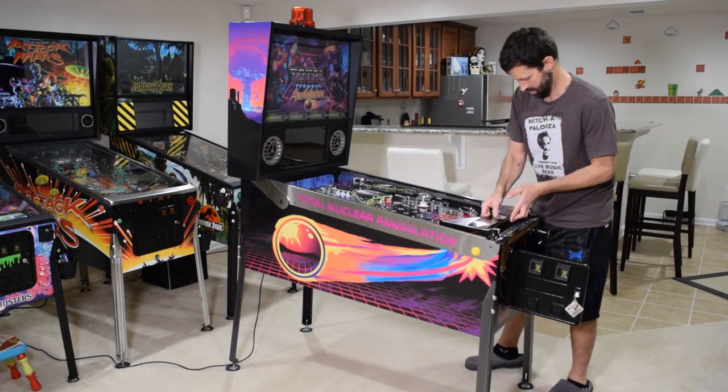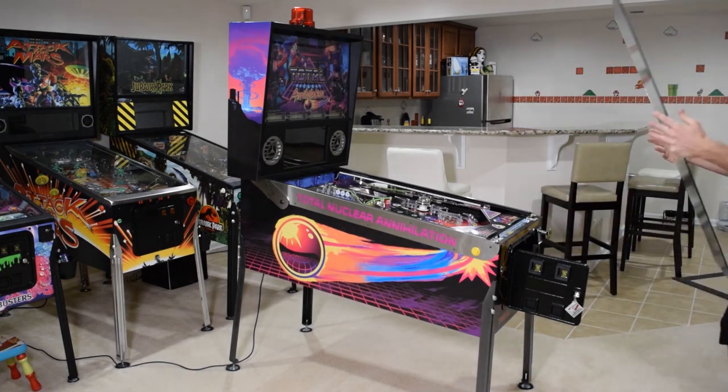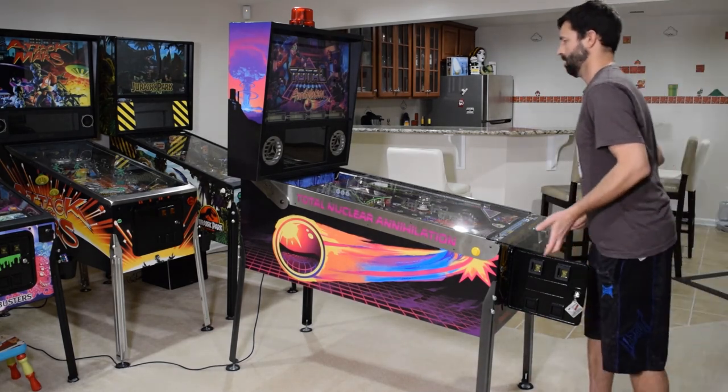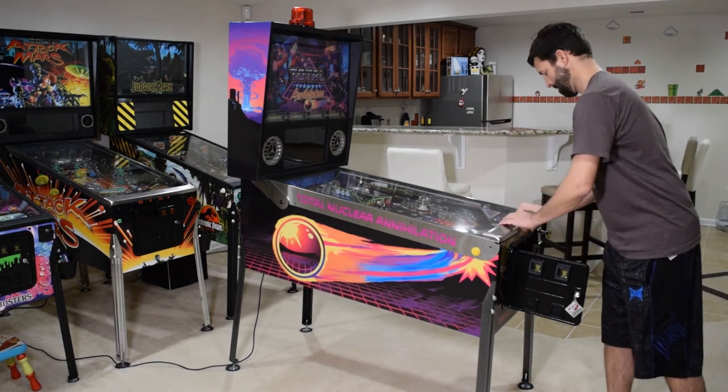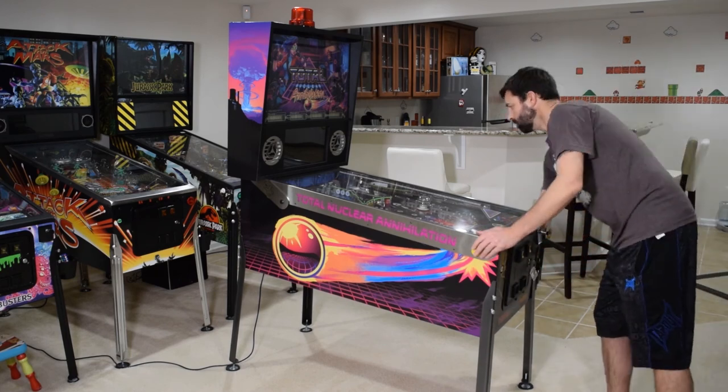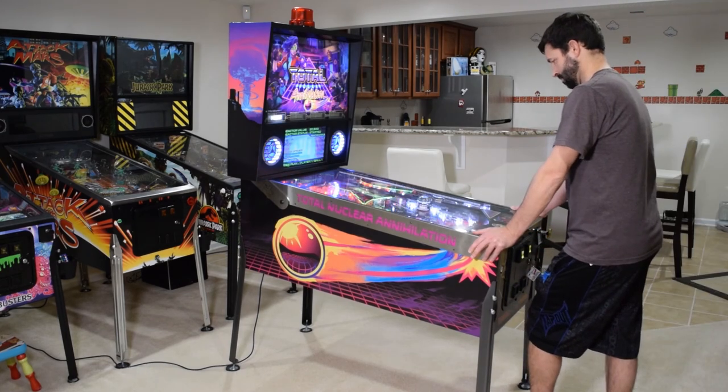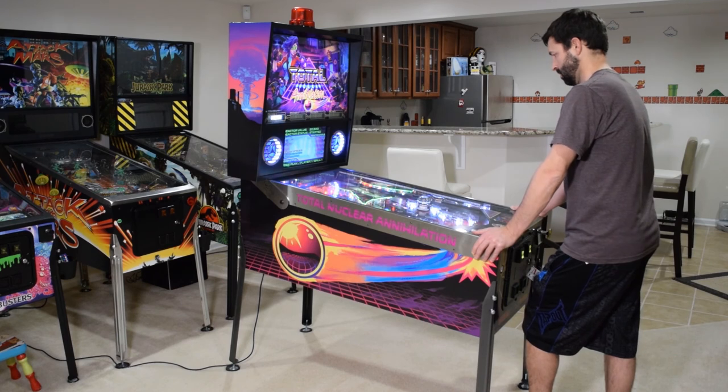If everything looks good, completely lower the playfield, install the pinballs, install the playfield glass and lock down bar and close the coin door. Go ahead and play a few test games just to make sure everything is working properly.